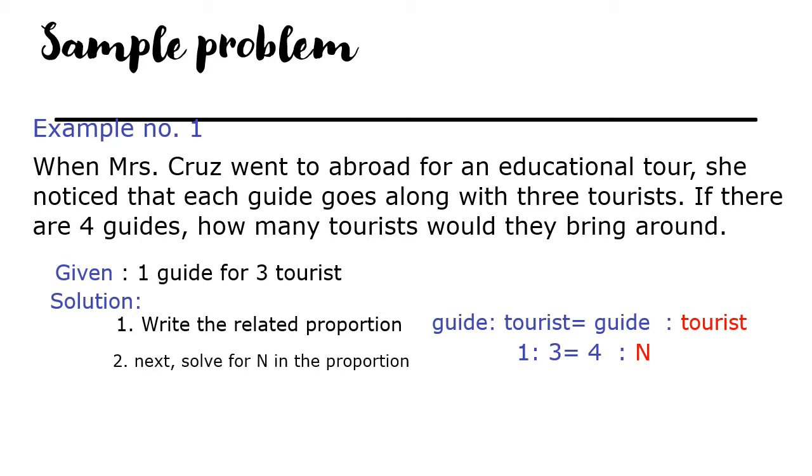Next, we will solve for N in the proportion. We need to know the number of tourists. 1N equals 4 times 3. We have N equals 12. Therefore, our answer is 12 tourists.